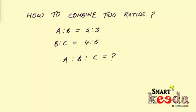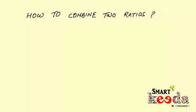Now let's see how to combine the ratios into one. I am going to write down the given ratios again but in a somewhat different manner. Here I write down the first ratio, that is A is to B.